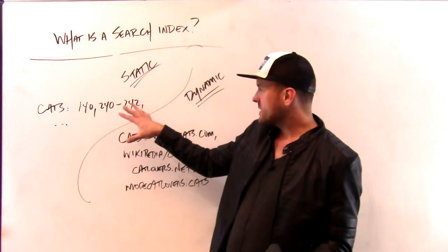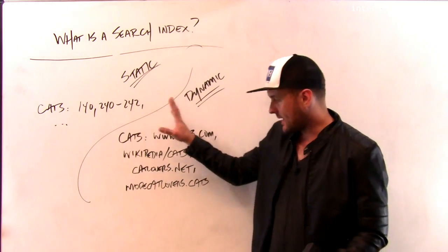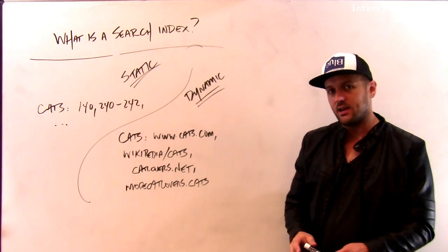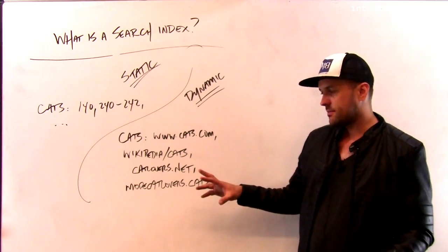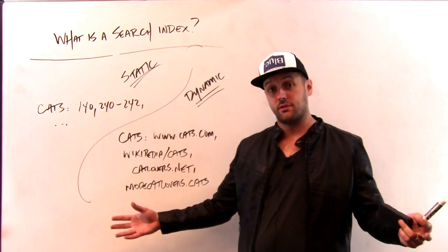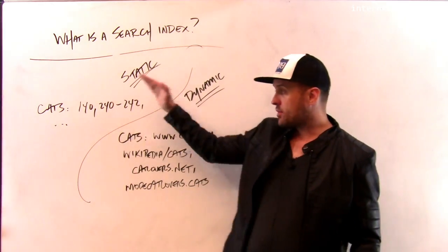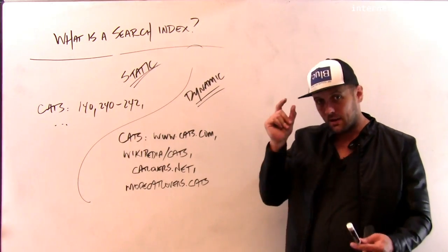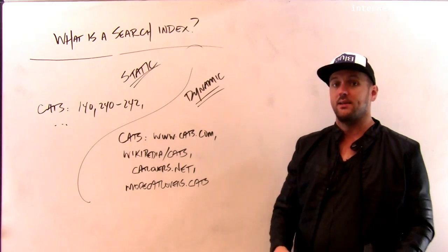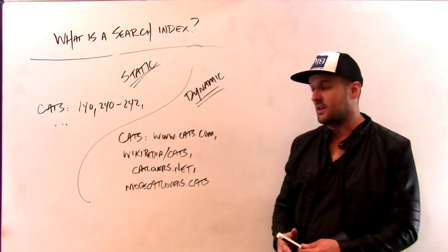And so, not only do web searches have to be constantly updated to support the dynamic nature of the web, but they also have to support any possible search term that I can type in. With a book index, I'm limited to the number of things I can look up by the things that appear in the index.